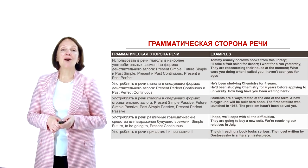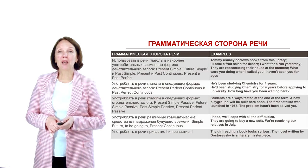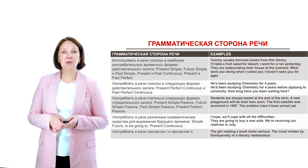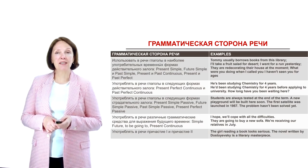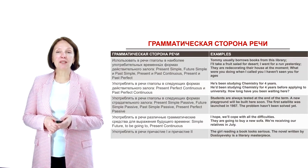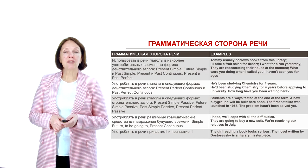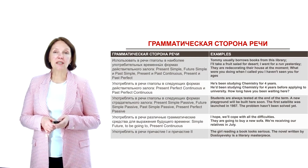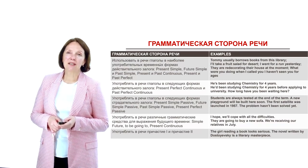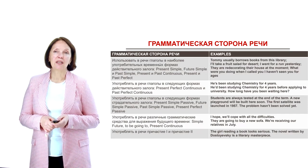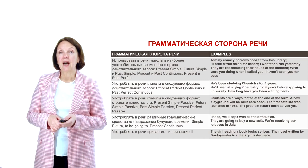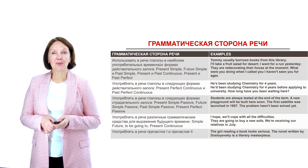Помимо наиболее употребительных временных форм действительного залога — Present Simple, Future Simple, Past Simple, Present/Past Continuous, Present Perfect — необходимо правильно употреблять в речи глаголы в следующих формах: Present Perfect Continuous, Past Perfect, Past Perfect Continuous. Например: He has been studying chemistry for four years. He had been studying chemistry for four years before applying to university. How long have you been studying German?